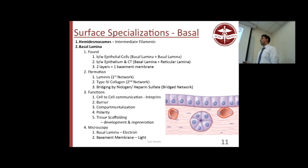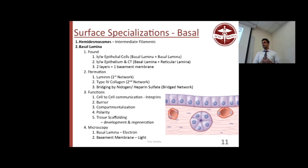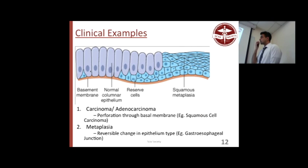Hemidesmosomes help with compartmentalization, polarity, and barrier formation. For cancer: if it penetrates through the basement membrane it's cancerous; otherwise, it's usually benign because it's in the epithelial tissue. Before it penetrates into connective tissue, we call it carcinoma in situ — a benign tumor. When it penetrates through, it becomes squamous cell carcinoma, which is severe. The progression is: moderate dysplasia → severe dysplasia → carcinoma in situ → squamous cell carcinoma. Squamous cell carcinoma is terminal if not treated.